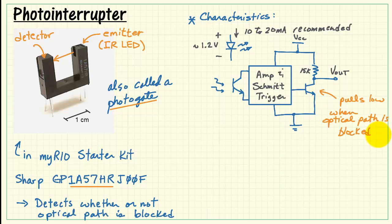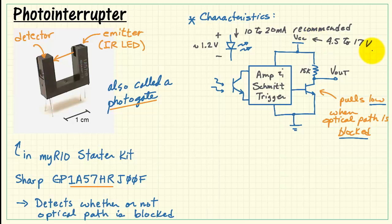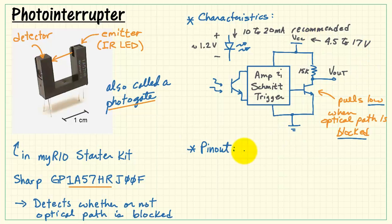The output is pulled low when the optical path is blocked. The recommended supply voltage is 4.5 to 17 volts.